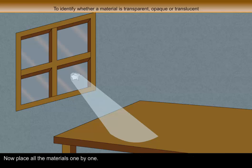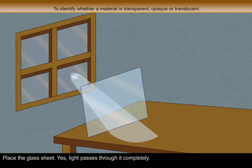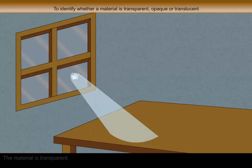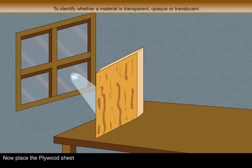Now place all the materials one by one. Let's place the glass sheet. Yes, light passes through it completely. So the material is transparent.